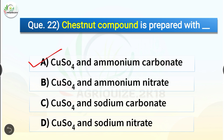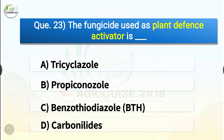Question number twenty-three: The fungicide used as plant defense activator is dash. The options are tricyclazole, propiconazole, benzothiadiazole (BTH), or carbonylamides. The correct answer is option C, benzothiadiazole (BTH). The fungicide used as plant defense activator is BTH. Question number twenty-four: The counter stain used in gram staining reaction is dash. The options are crystal violet, safranin, iodine, or negrosin. The correct answer is option B, safranin. The counter stain used in gram staining reaction is safranin — a weakly water-soluble dye that stains the sample red.